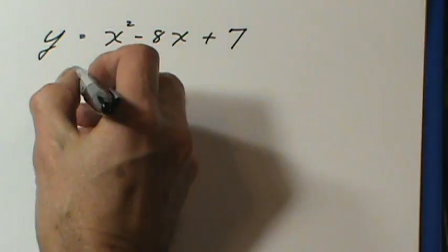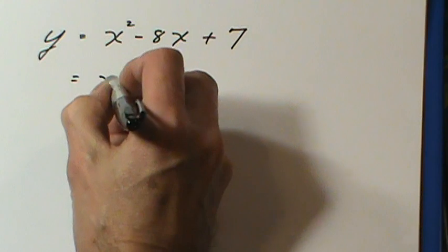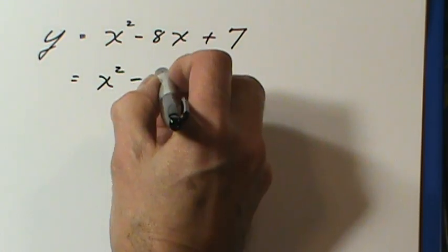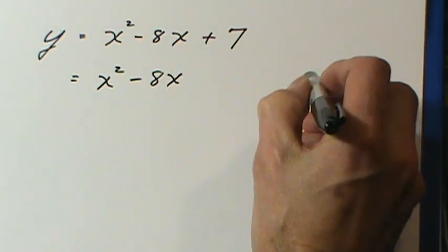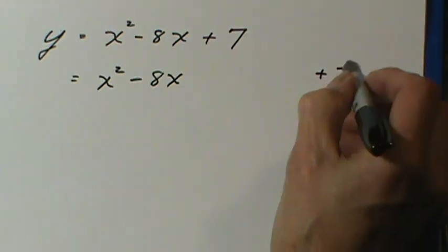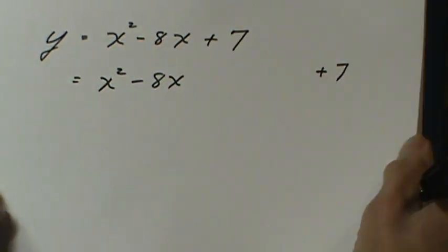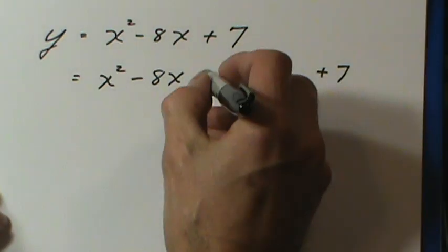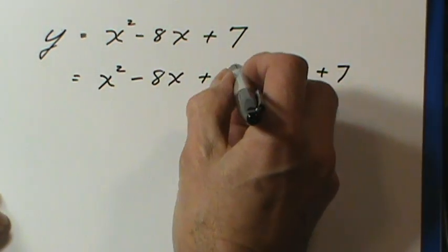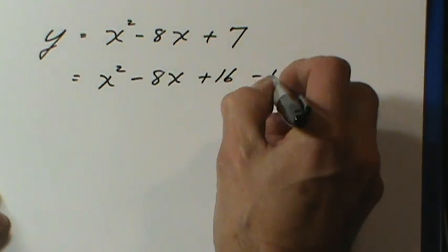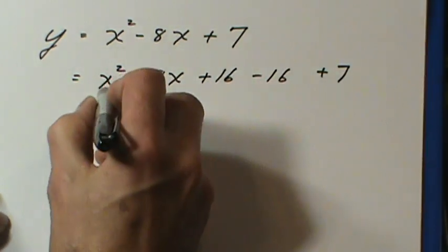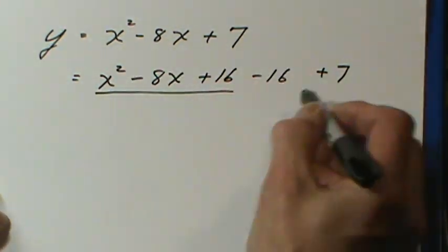Here's another example. Again, write down the first two terms, move the seven out of the way, take half of the negative eight, which is negative four, square negative four, you get sixteen. Add the sixteen and subtract the sixteen. That gives us a perfect square.